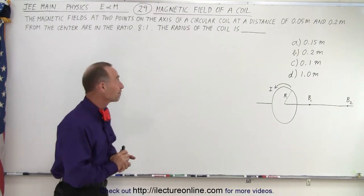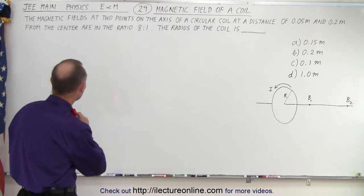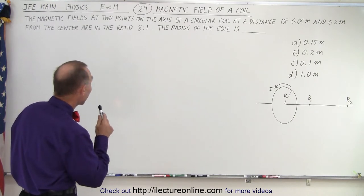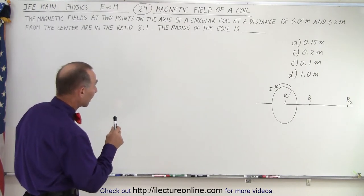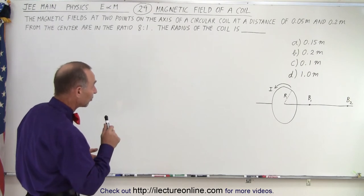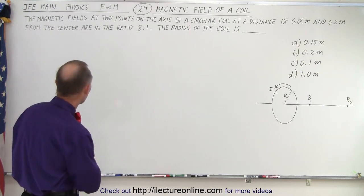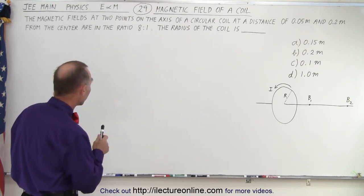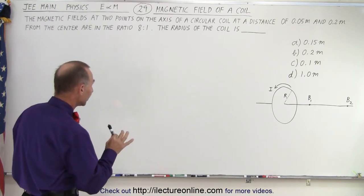So let's read it and see why. It says the magnetic fields at two points on the axis of a circular coil at a distance of 0.05 meters and 0.2 meters from the center are in the ratio eight to one. The radius of the coil is.